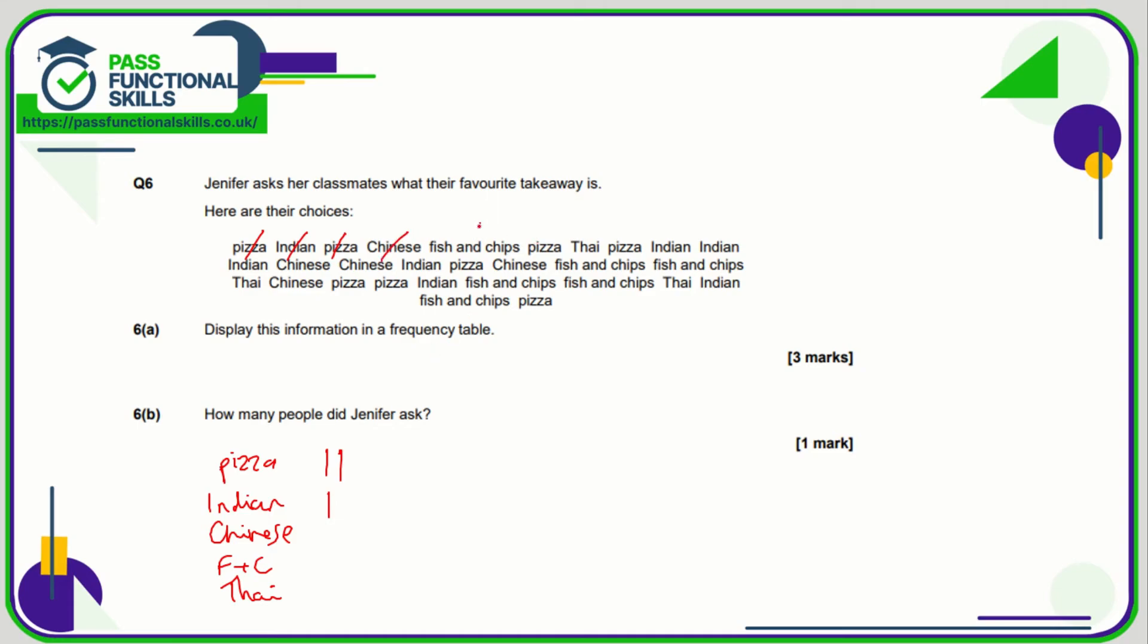Chinese, fish and chips, pizza, Thai, pizza, Indian, Indian, Thai, pizza, Indian, Indian, Indian, Chinese, Chinese, Indian, Indian, Chinese, Chinese, Indian, Indian, Chinese, fish and chips. This is going to be the fifth, so I'm going to do a diagonal strike so that we've got a nice clear batch of five. Pizza, Chinese, fish and chips, pizza, batch of five, Chinese, fish and chips, fish and chips, Thai, Chinese, fish and chips, Thai, Chinese, that's a batch of five of the Chinese. Pizza, pizza, Indian, fish and chips. Pizza, pizza, Indian, fish and chips, fish and chips, Thai, Indian, fish and chips, batch of five, Thai, Indian, and fish and chips and pizza, fish and chips, pizza. And so I've done my tally marks.